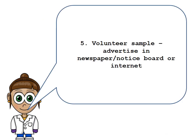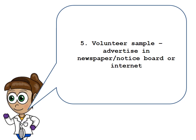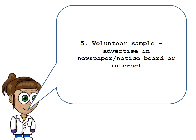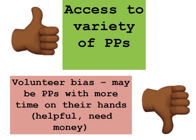The last type of sampling is volunteer sampling — exactly what it says. Those that volunteer will be your participants. You could advertise in newspapers, notice boards, or on the internet. A strength of volunteer sampling is that we have access to a variety of participants. However, a problem is volunteer bias.